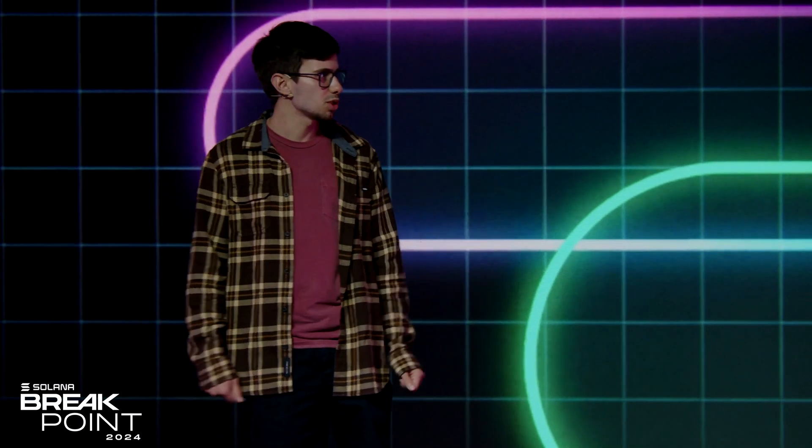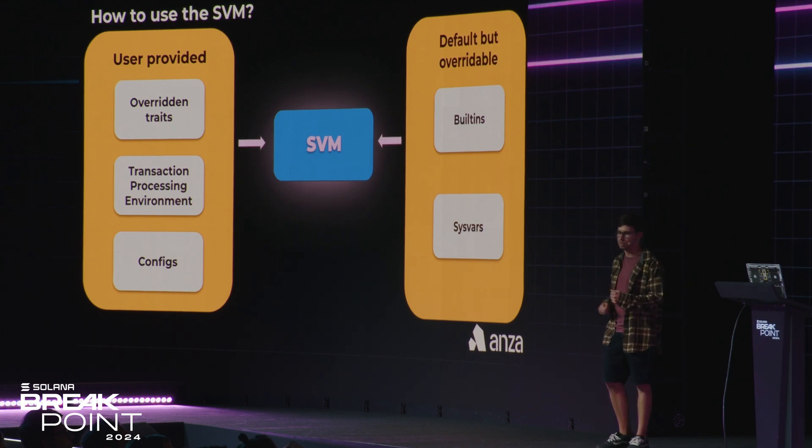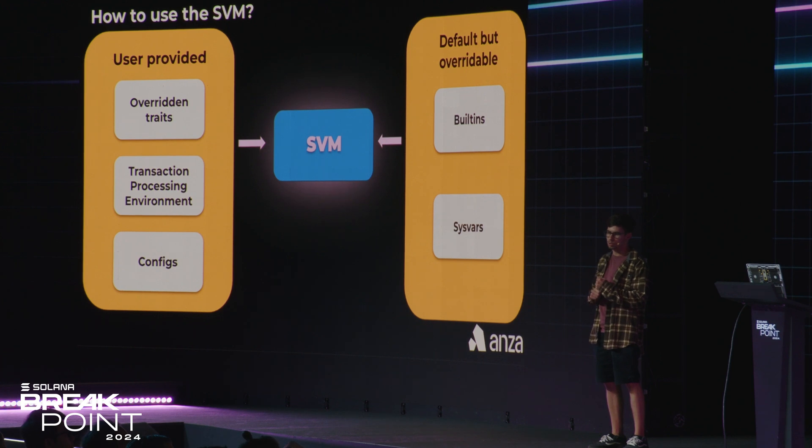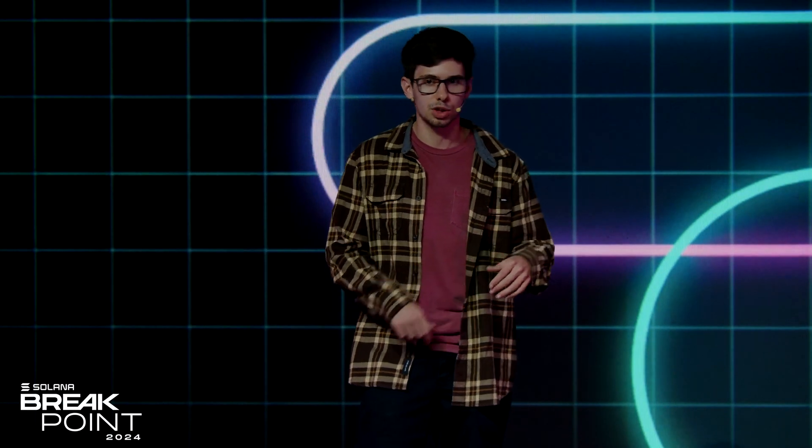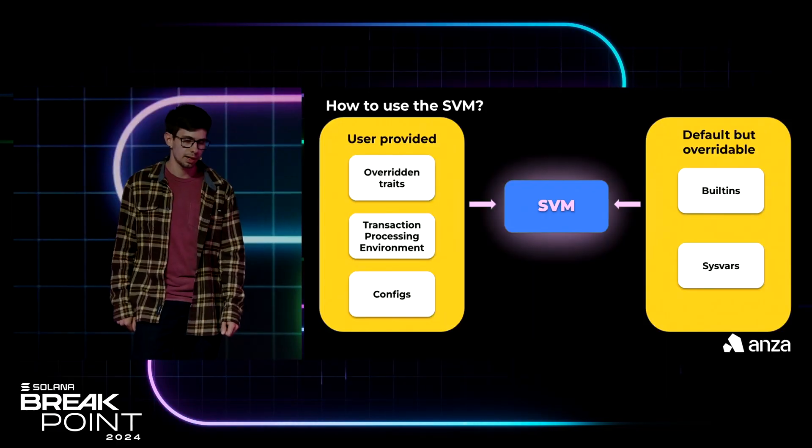So how can we use the SVM? We have a set of items that users need to provide. There are overrideable traits you need to implement because we made them generic over Agave, so anyone can implement them for their own needs. There are also two data structures: the transaction processing environment and the transaction processing config. We also have items Agave provides that are overrideable — one set of built-ins, which can be either built-in functions or built-in programs like the system program and the stake program, and sysvars, which are variables programs can access during execution. Developers can import these or develop their own solutions.